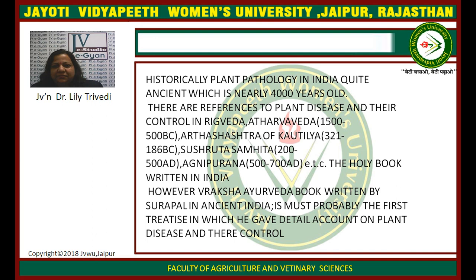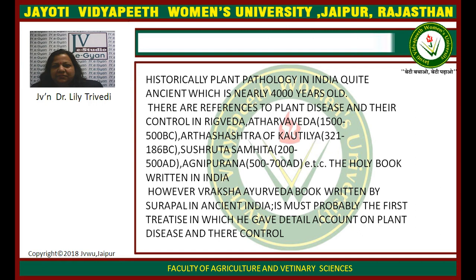There are references to plant diseases and their control in Rig Veda, Atharva Veda, Arth Shastra of Kautilya, Sushastra Samhita, Agni Purana — holy books written in India. However, Vraksh Ayurveda, a book written by Surapala in ancient India, is probably the first treatise in which he gave a detailed account on plant disease and their control.